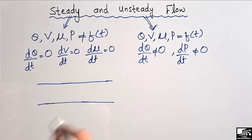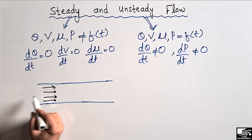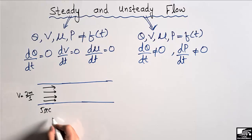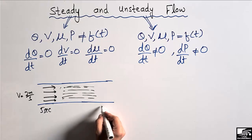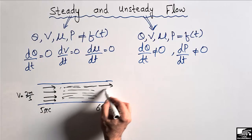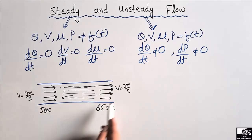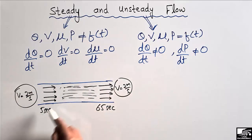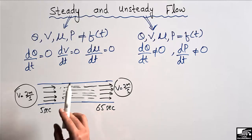Now consider a fluid flowing through a pipe. In the case of steady flow, this fluid has a velocity of two meters per second, and we measure it at five seconds. After one minute — at 65 seconds — the fluid is measured again and the velocity comes out to be two meters per second. The velocity has not changed with respect to time, so we call this steady flow, because we get the same velocity at five seconds and at 65 seconds.